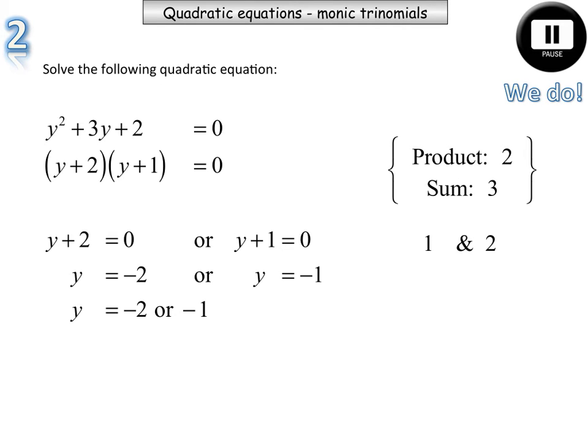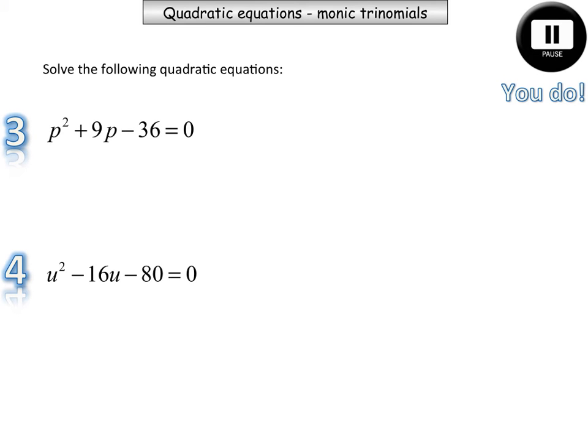How did you go? Pause the video, solve both of these two quadratics, and see how you went. Question 3, you end up getting p = -12 or positive 3. And question 4, you get u = -4 or positive 20.